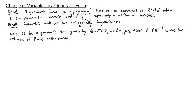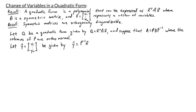Suppose that Q is the quadratic form given by x transpose Ax, and suppose that the symmetric matrix A has the orthogonal diagonalization PDP inverse, where the columns of P are orthonormal. Now let's define a new variable vector y consisting of variables y1 through yn, and let y be defined by P inverse times x.